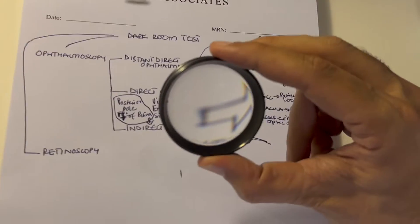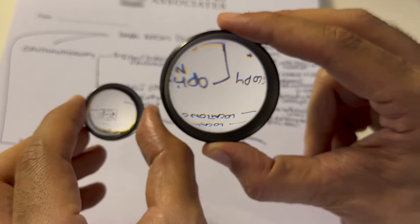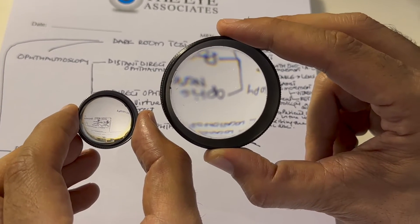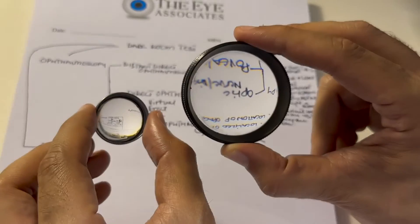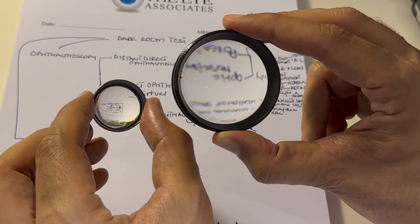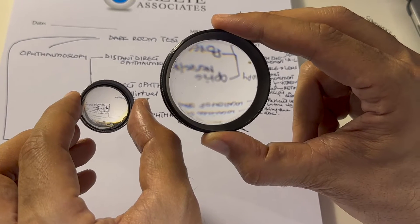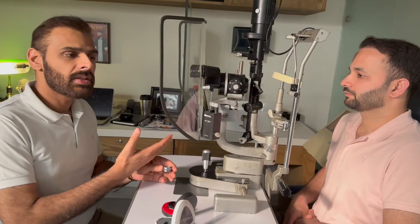If you are using an indirect ophthalmoscope, you use either a 20-diopter lens or a 28-diopter lens. Comparing this with a 90-diopter or super field, the image is much smaller in the 90-diopter. Both images are inverted, and the field of view is much more in the 90-diopter whereas it is lesser in the 20-diopter lens.